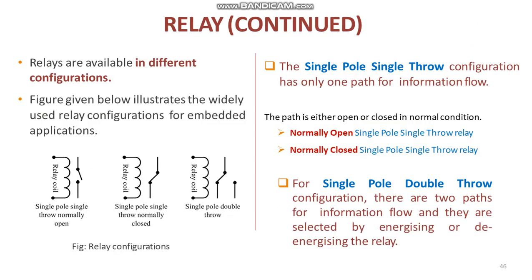Relays are available in different configurations as shown in the diagram. The single pole single throw configuration has only one path for information flow; the path is either open or closed in normal condition. For a normally open SPST relay, the circuit is normally open and it becomes closed when the relay is energized. For a normally closed SPST relay, the circuit is normally closed and it becomes open when the relay is energized. For the single pole double throw configuration, there are two paths for information flow and they are selected by energizing or de-energizing the relay.